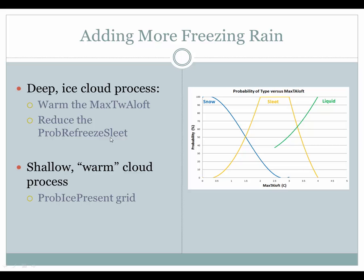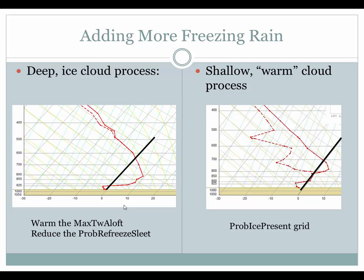Secondly, the probability of weather type looks for a probability of refreezing to sleet in the boundary layer, so we need to make sure that that's either non-existent or at very low probabilities for sleet. One other way to get more freezing rain is to remove the ice cloud from the probability of weather type grids, and that's done through the probability of ice present grid and setting it to zero. That will change your entire grid forecast over to either freezing rain or freezing drizzle.